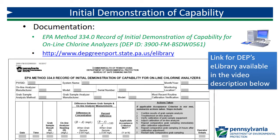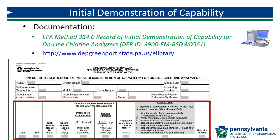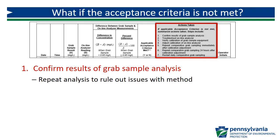Use the DEP form for the initial demonstration of capability for online analyzers for documentation. This and all of DEP's Method 334.0 forms can be found on eLibrary. Begin by completing the general information at the top, which is identical to the top of the comparative grab sample analysis form. Use the bottom of the form to record your comparison analyses for the IDC. The IDC form includes a place to indicate whether the IDC passed or failed. In order to pass the IDC, the acceptance criterion must be met for 14 consecutive days without calibration adjustment. If the analyzer passes the IDC, it can be used for compliance monitoring or log inactivation calculations. If during the course of the IDC the acceptance criteria is not met, follow-up actions are required.